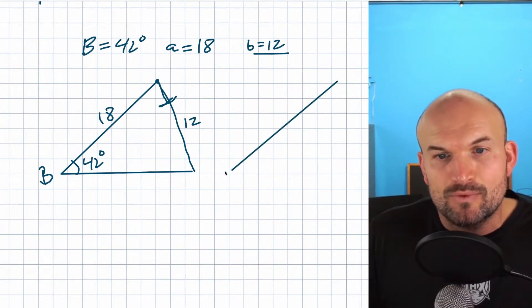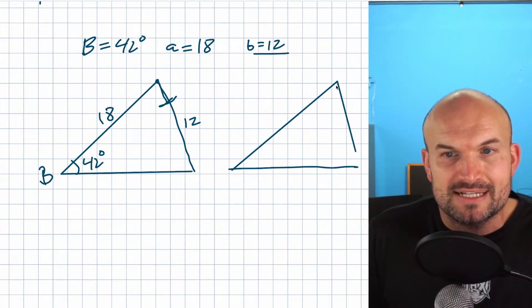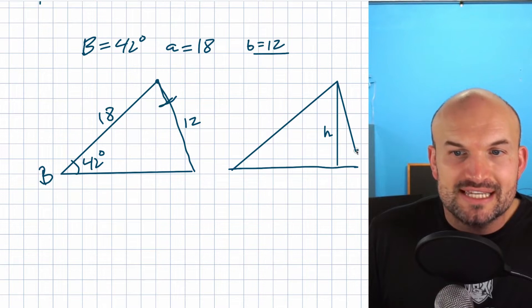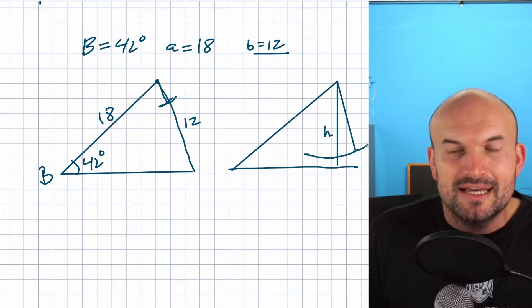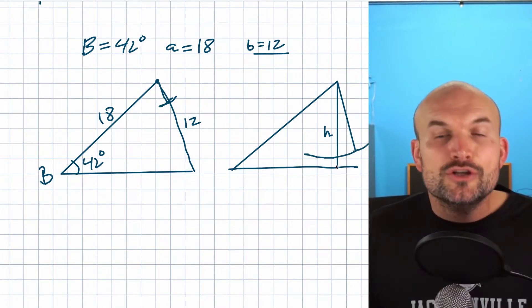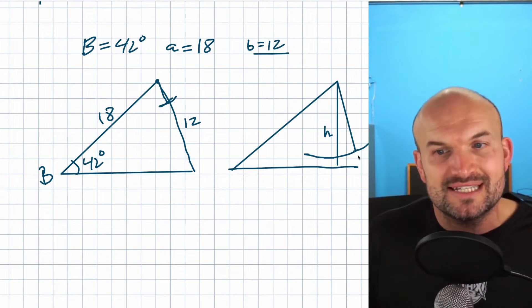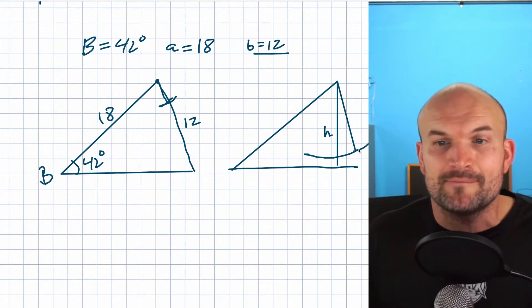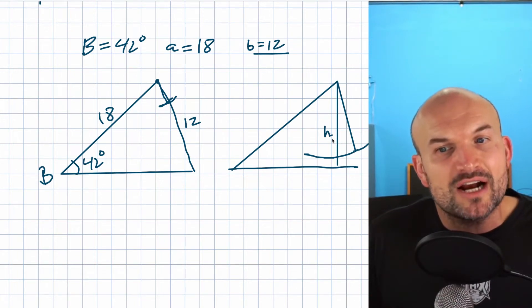The main thing we need to understand is why is no triangle going to exist? No triangle is going to exist whenever this opposing side is basically going to be shorter than the height. In this example, we have the height h. As long as this side, no matter how much I rotate it, as long as that's shorter than the height, no triangle is ever going to be made because this is not going to close in the figure.